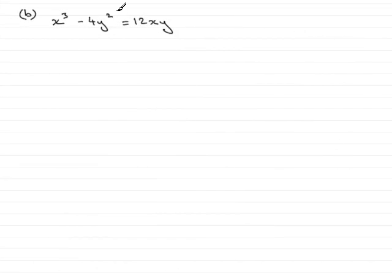Now we're given x cubed minus 4y squared equals 12xy and asked to find the gradient at the points where x is minus 8.